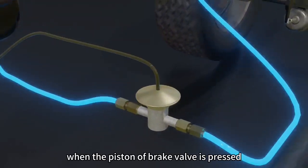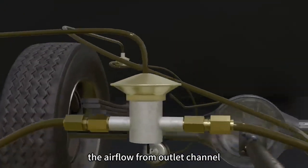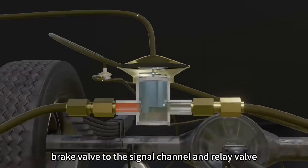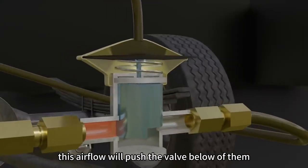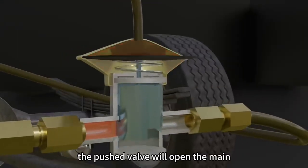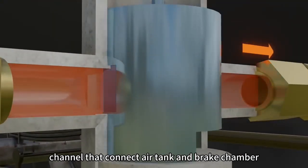Then how does it work? When the piston of brake valve is pressed, the air flows from outlet channel brake valve to the signal channel in relay valve. This air flow will push the valve below them. The pushed valve will open the main channel that connects air tank and brake chamber.